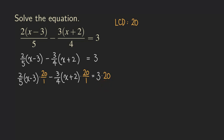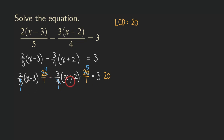Now let's do the canceling. We cancel the 20 with the denominator — the 5 becomes a 1 because we are dividing top and bottom by 5, so 20 divided by 5 is 4. For the second term, the 4 and the 20 cancel by dividing by 4 — the 4 becomes a 1, and 20 divided by 4 becomes a 5. The stuff inside the parentheses we are not going to touch, so just leave them for now.